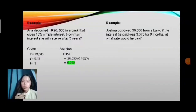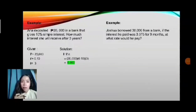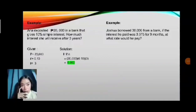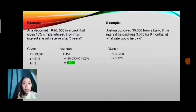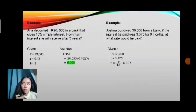Example 2: Joshua borrowed 30,000 from a bank. If the interest he paid was 3,375 for 9 months, at what rate would he pay? What we are looking for is the rate. Remember, time must always be in years, but here it is 9 months, so we divide by 12. Given: P equals 30,000, interest is 3,375, and time is 9 over 12 equals 0.75. We convert months to years by dividing by 12 since there are 12 months in a year.